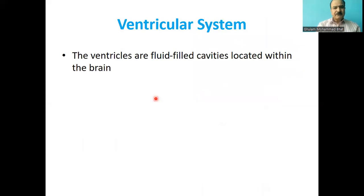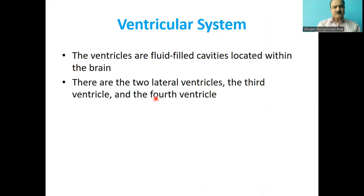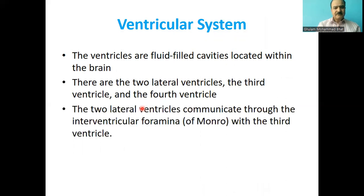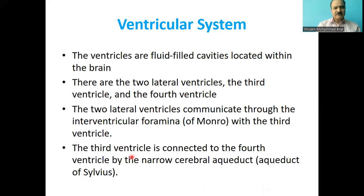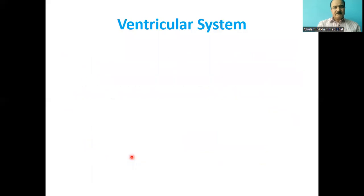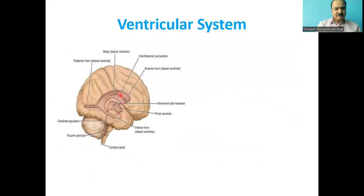The ventricles are fluid-filled cavities located within the brain. There are two lateral ventricles, the third ventricle, and the fourth ventricle. The two lateral ventricles communicate through the interventricular foramen of Monro with the third ventricle, whereas the third ventricle is connected to the fourth ventricle by the narrow cerebral aqueduct, also called the aqueduct of Sylvius.